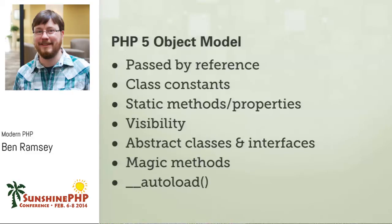What was different about the object model of PHP 5 is that objects were now passed by reference by default. Previously in PHP 4, every time you passed an object into a method or function or assigned it to a new variable, it copied it — cloned it. PHP 5 introduced class constants, static methods and properties, visibility (public, private, protected), abstract classes and interfaces. We got a real proper object. And it introduced the autoloader, which I think has been crucial and critical to modern PHP development.